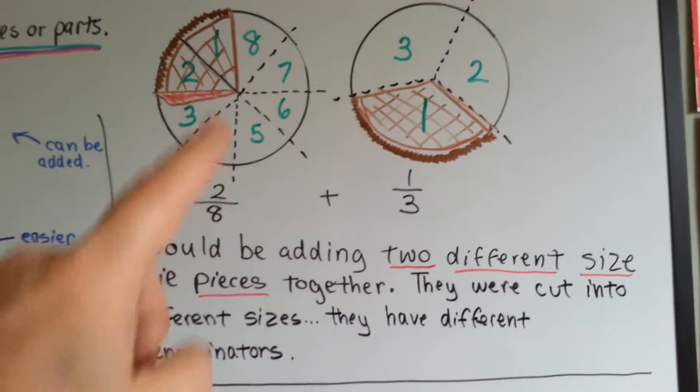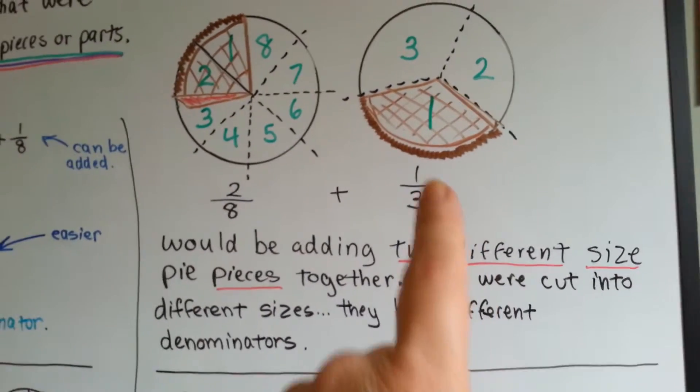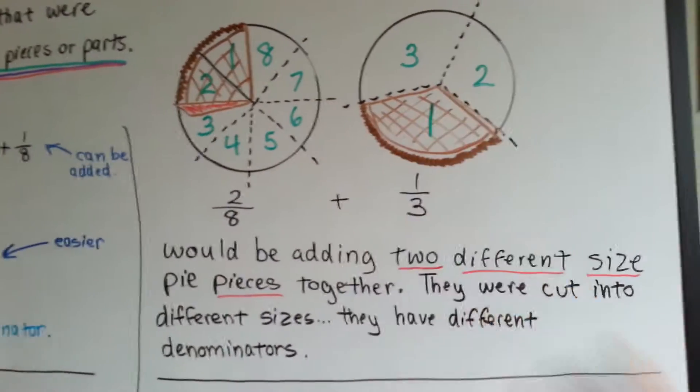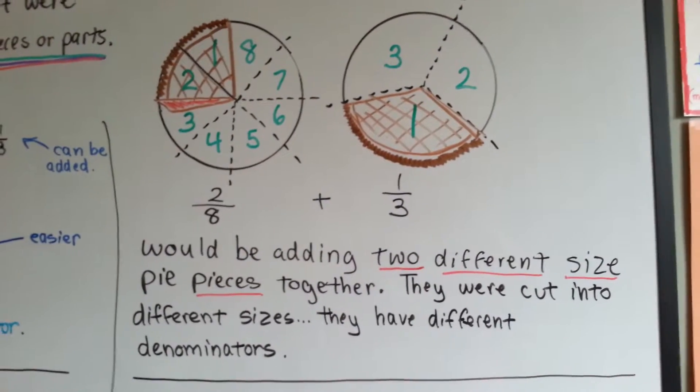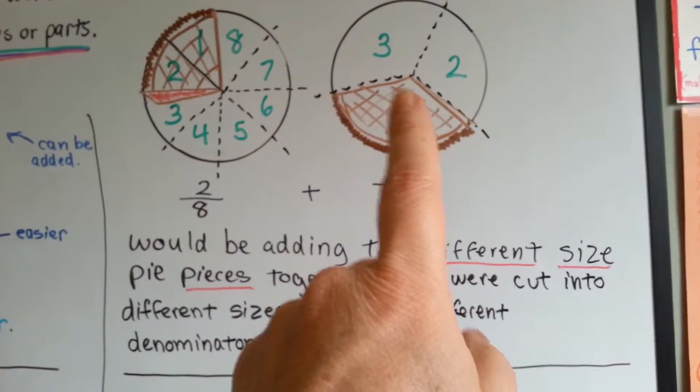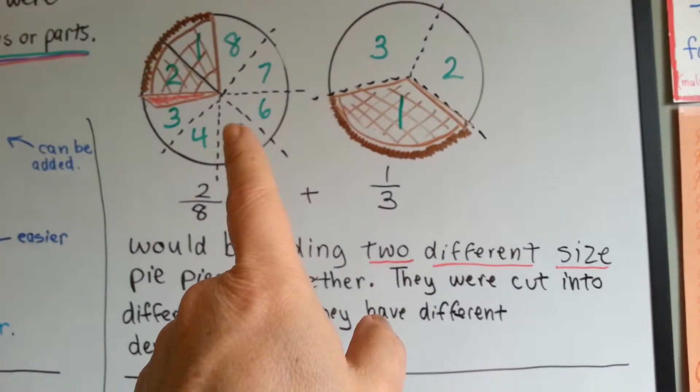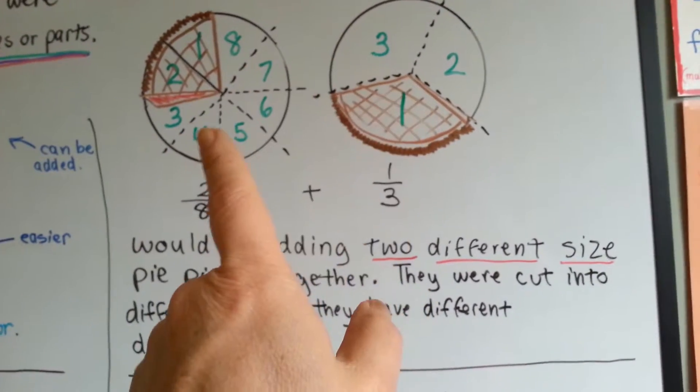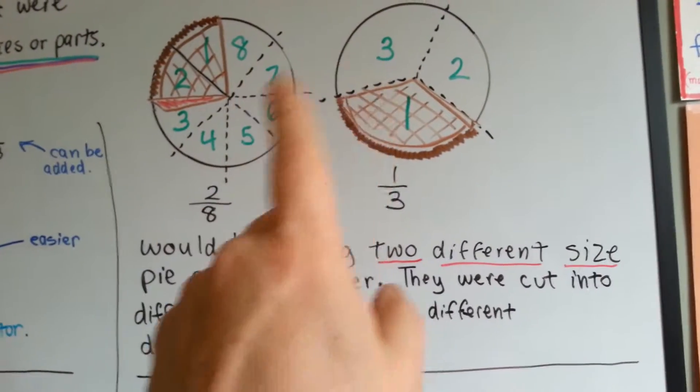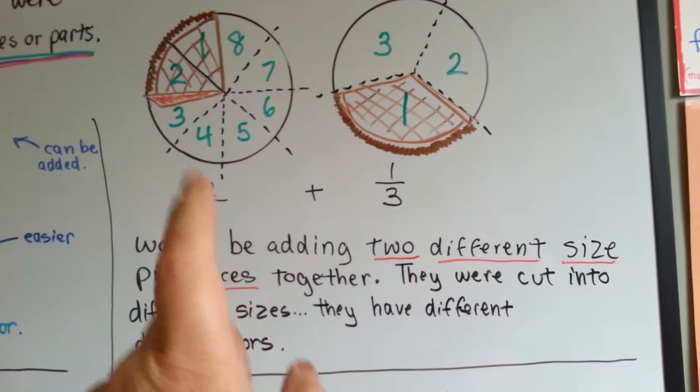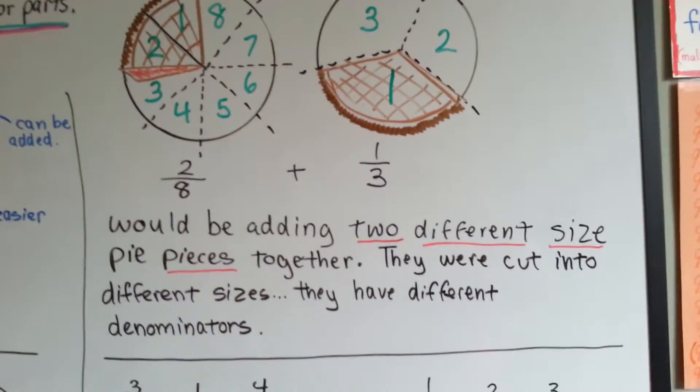The bigger the denominator, the smaller the piece. The smaller the denominator, the bigger the pieces are. You could still add and put this pie piece into this plate because they're both identical pies, but it would be more difficult to add them together than if they were cut into the same size.